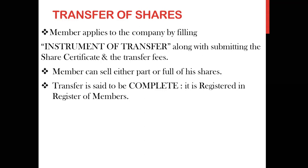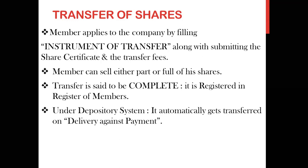Only when the registration is complete is the register of members updated and the share certificate issued. Similarly, the transfer is complete only when Mr. B's name appears in the register of members in place of Mr. A. Under the depository system, shares are automatically transferred on delivery against payment. When the transfer is made electronically, you don't need to go through this full procedure — all this procedure applies only to physical transfer of shares.